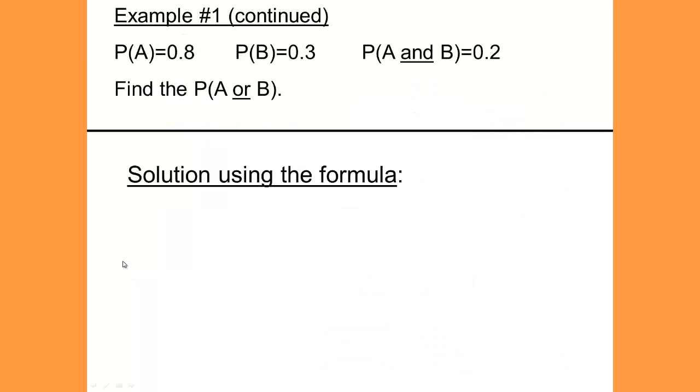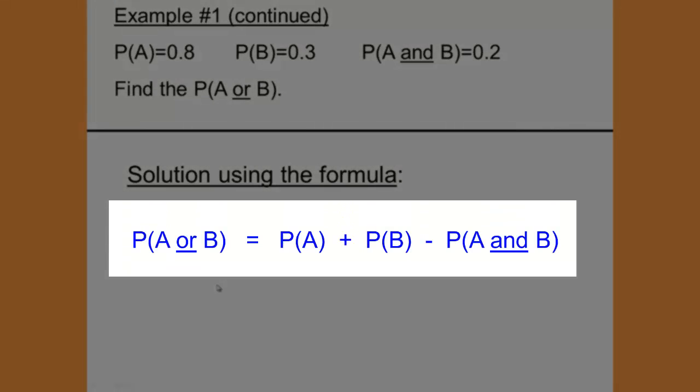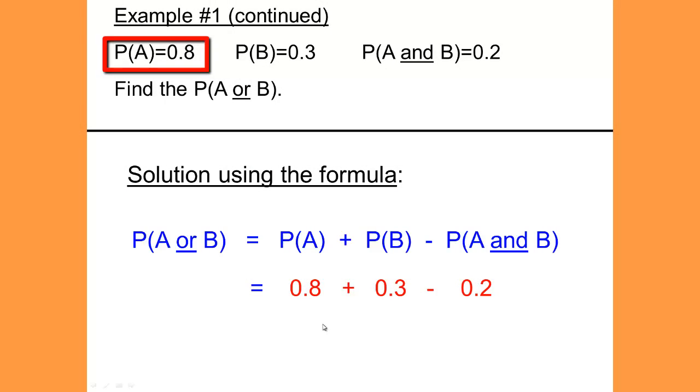The next part would be to find the solution using the formula. The probability of A or B equals the probability of A plus the probability of B minus the probability of A and B. The probability of A is 0.8, the probability of B is 0.3 minus the probability of A and B, which is 0.2. 0.8 plus 0.3 minus 0.2 is 0.9, and we get the same answer.